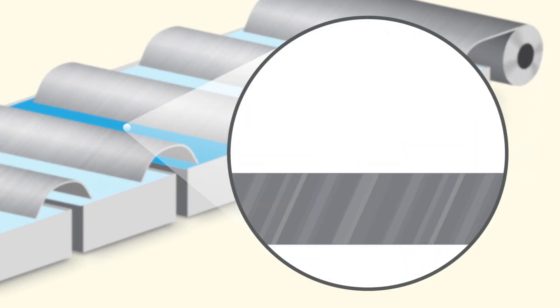Step three in the process is where the anodic layer is grown. The more time the metal spends in the anodizing tank, the thicker the anodic layer will be.